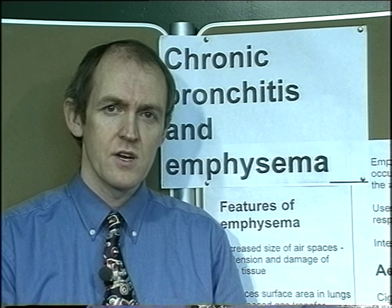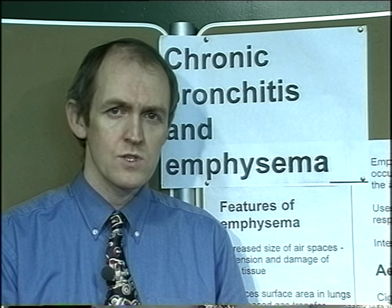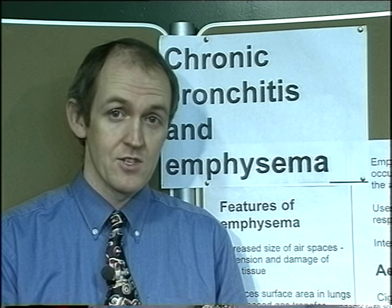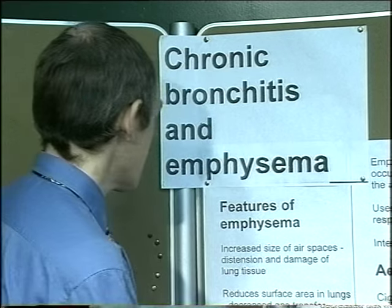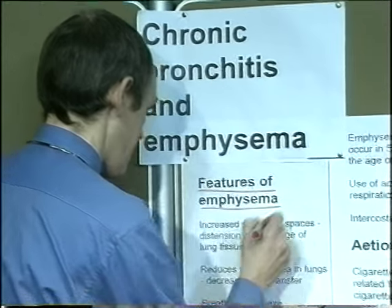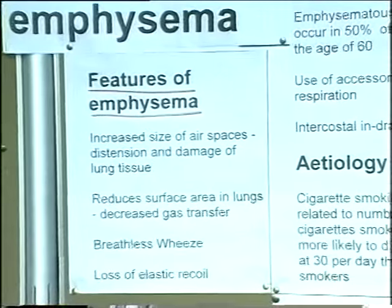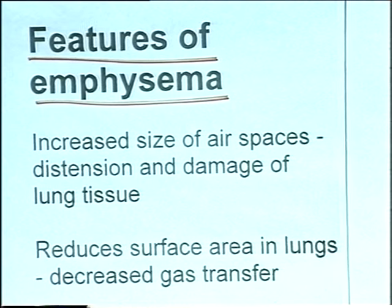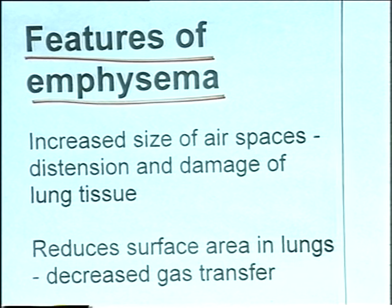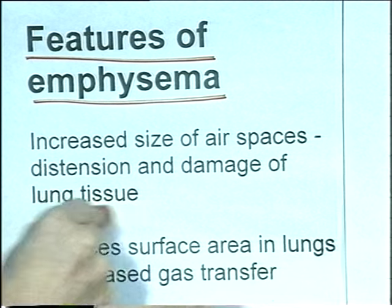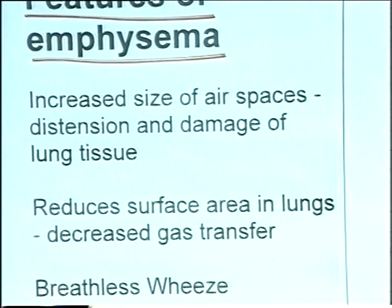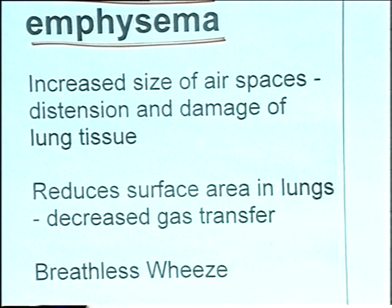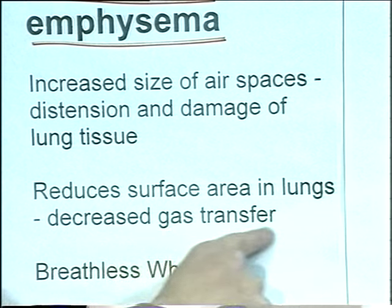Emphysema is the destruction of the alveolar walls, resulting in loss of elasticity and loss of alveolar surface area. Features of emphysema: increased size of airspaces, distension and damage of the lung tissue itself. This means that the surface area available for gaseous exchange is reduced. Therefore, you get decreased gas transfer.